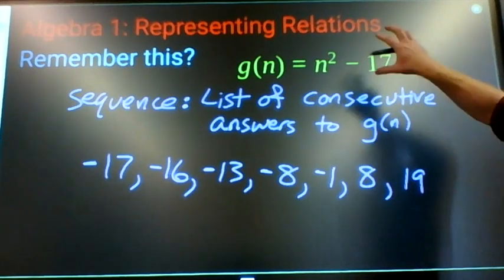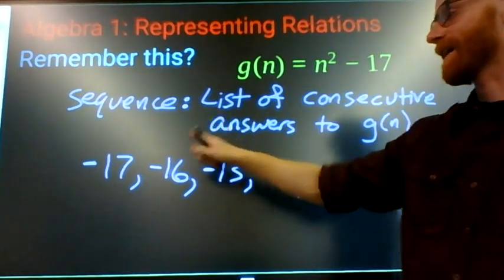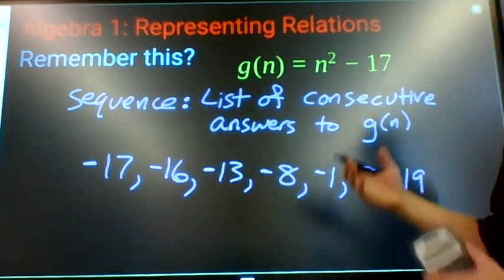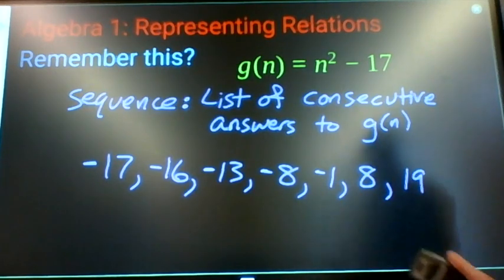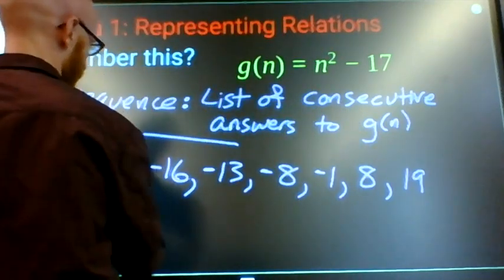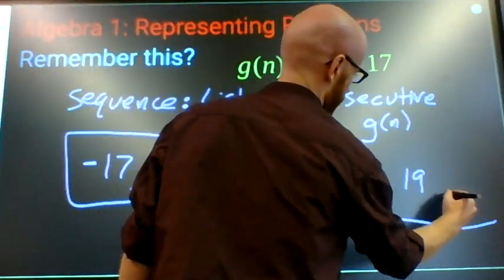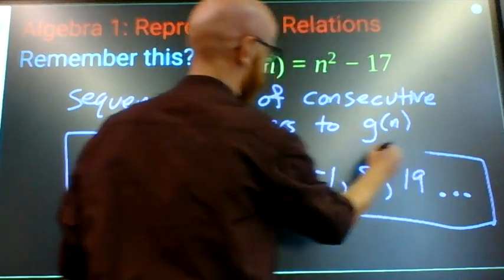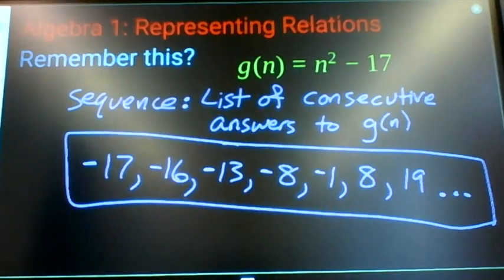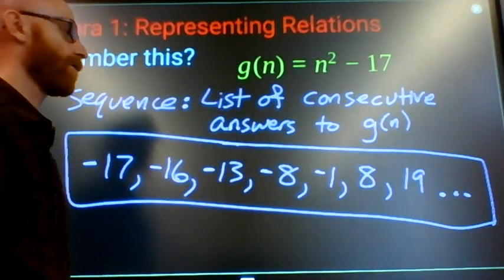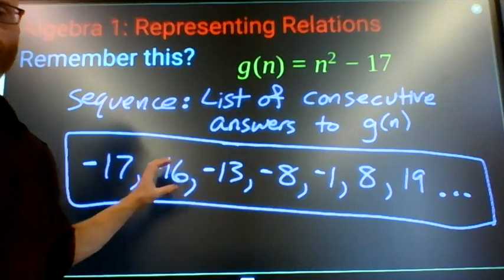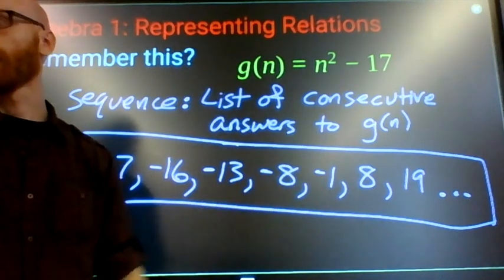You're applying the rule to consecutive terms. Now it's a little different from doing a table or a graph. We only show our answers. We don't show what we used to find the answers, we don't show what number they link in with when we're writing a sequence.